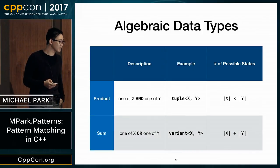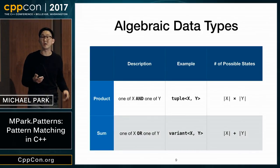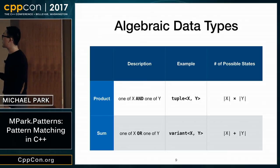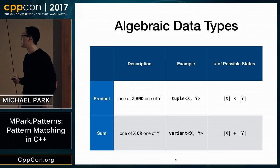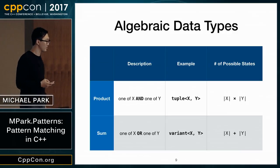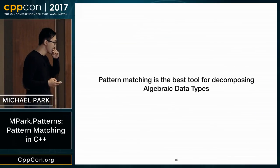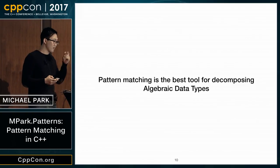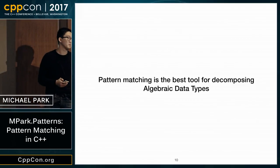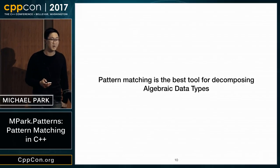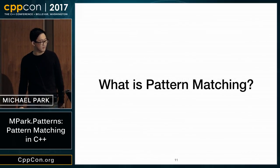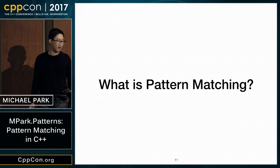On the other axis, we have sum types, where we hold one of the types we gave it. A variant<X, Y> stores either X or Y, not both. My claim is that pattern matching is the best tool for decomposing algebraic data types.